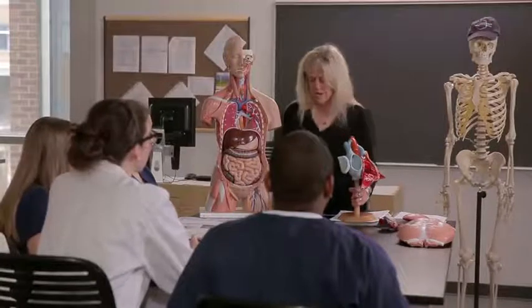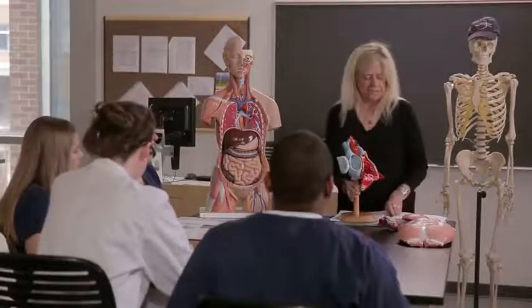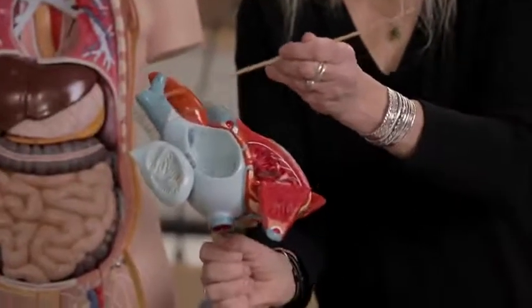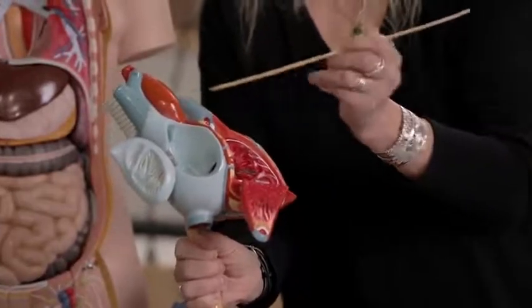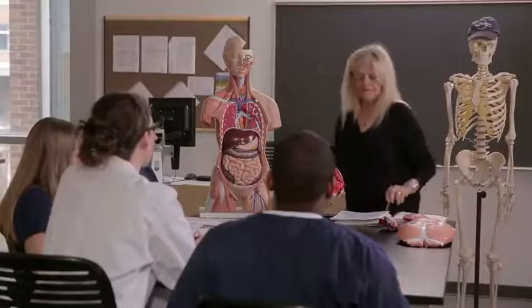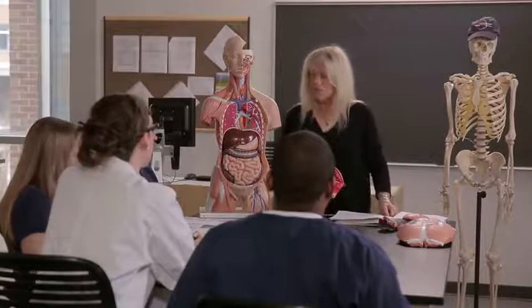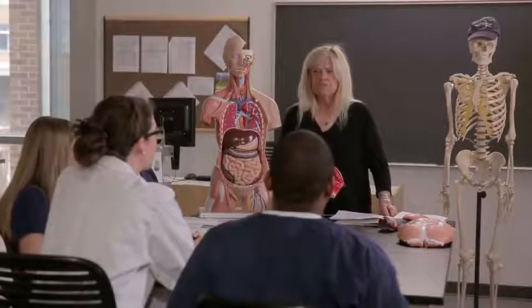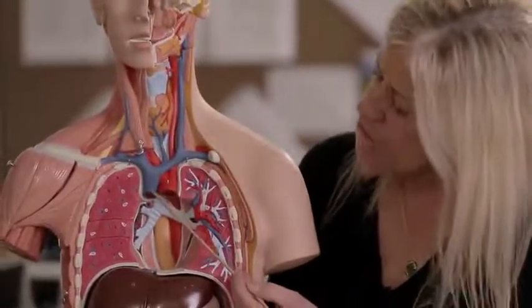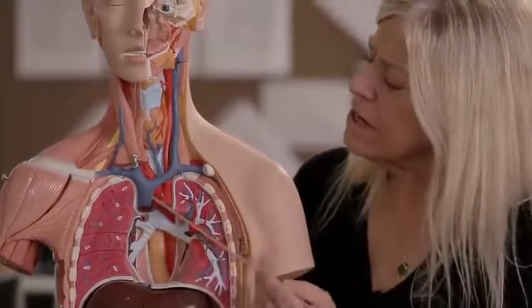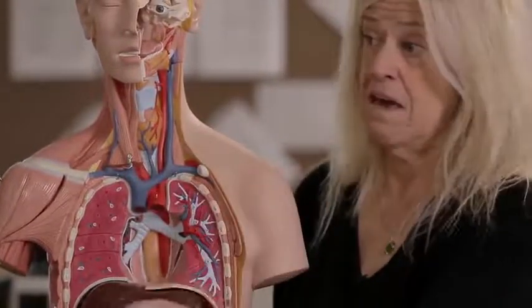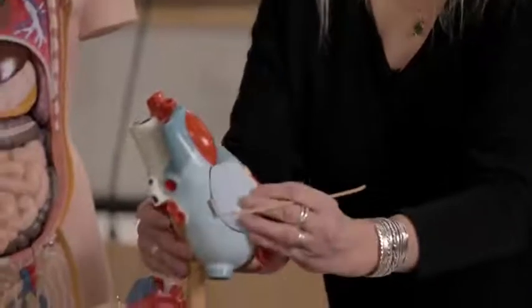Three vessels carry deoxygenated blood back to the right atrium. The first is the superior vena cava, which returns blood from the upper extremities, head, and neck — all areas above the heart.